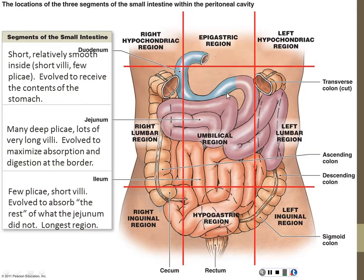The three regions of the small intestine are important to know because of their differences: the duodenum evolved to neutralize, the jejunum evolved to digest and absorb, and the ileum to pick up the rest. Even in a living patient with the abdomen open, you can tell the difference — the jejunum is thicker and the ileum is much thinner, and the duodenum has a different appearance too.